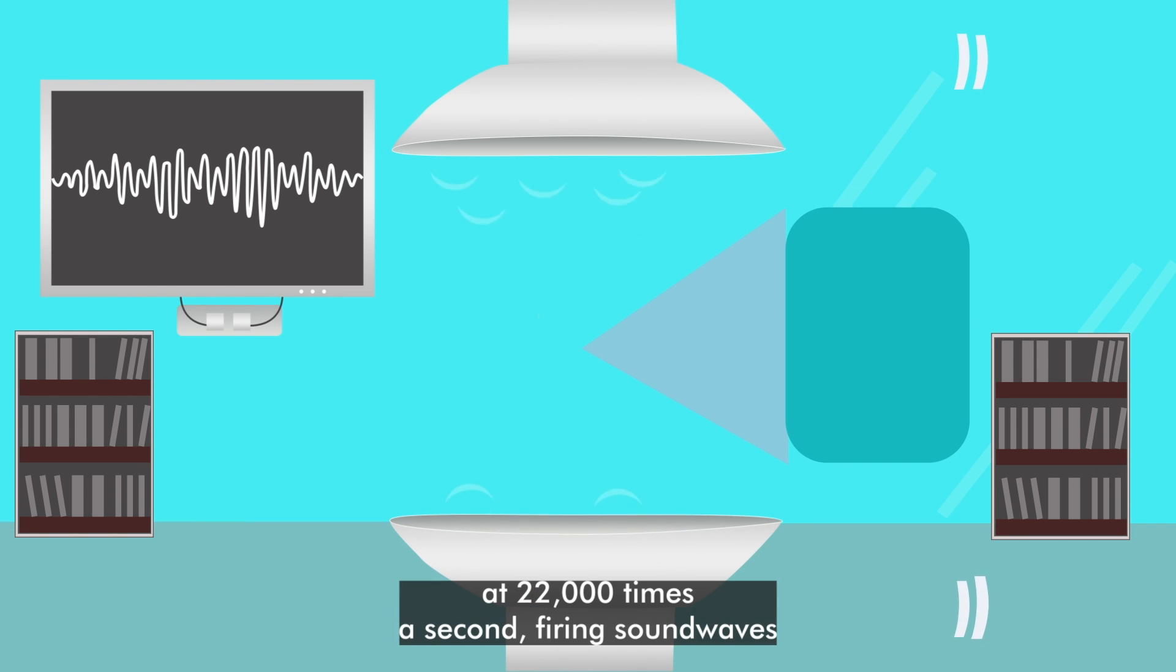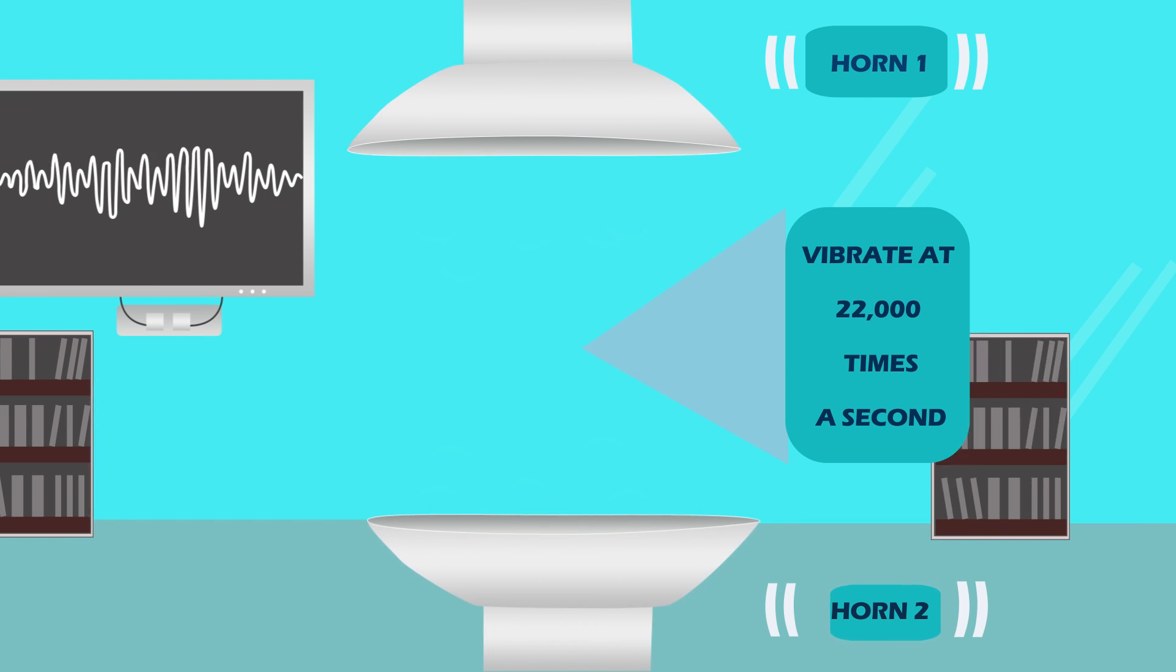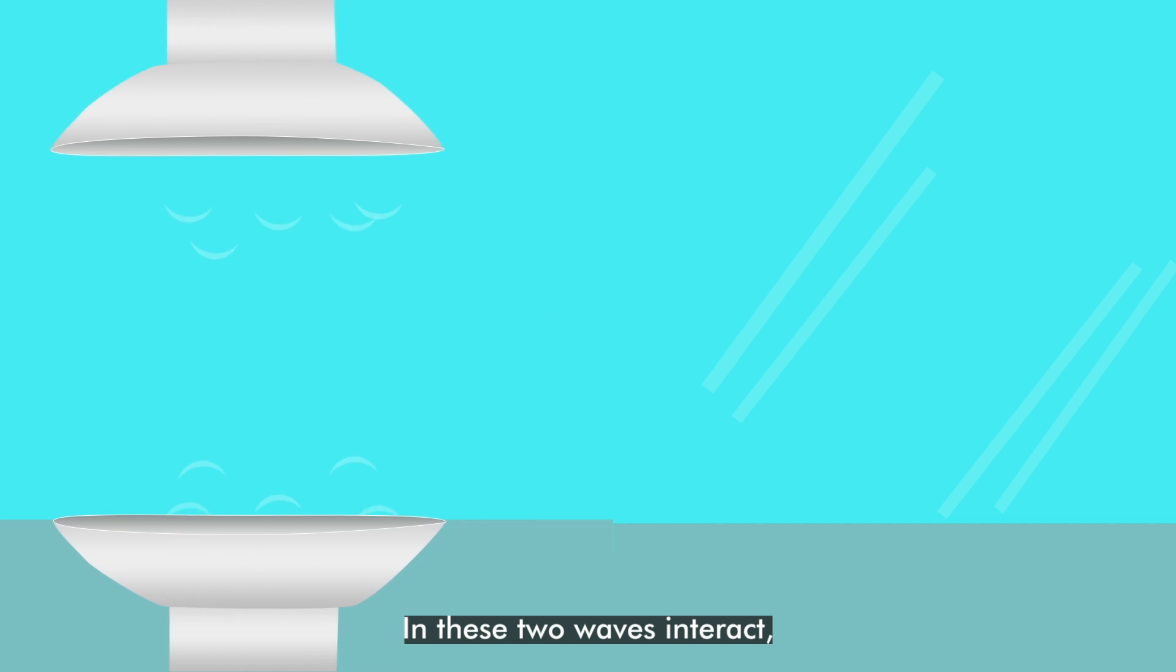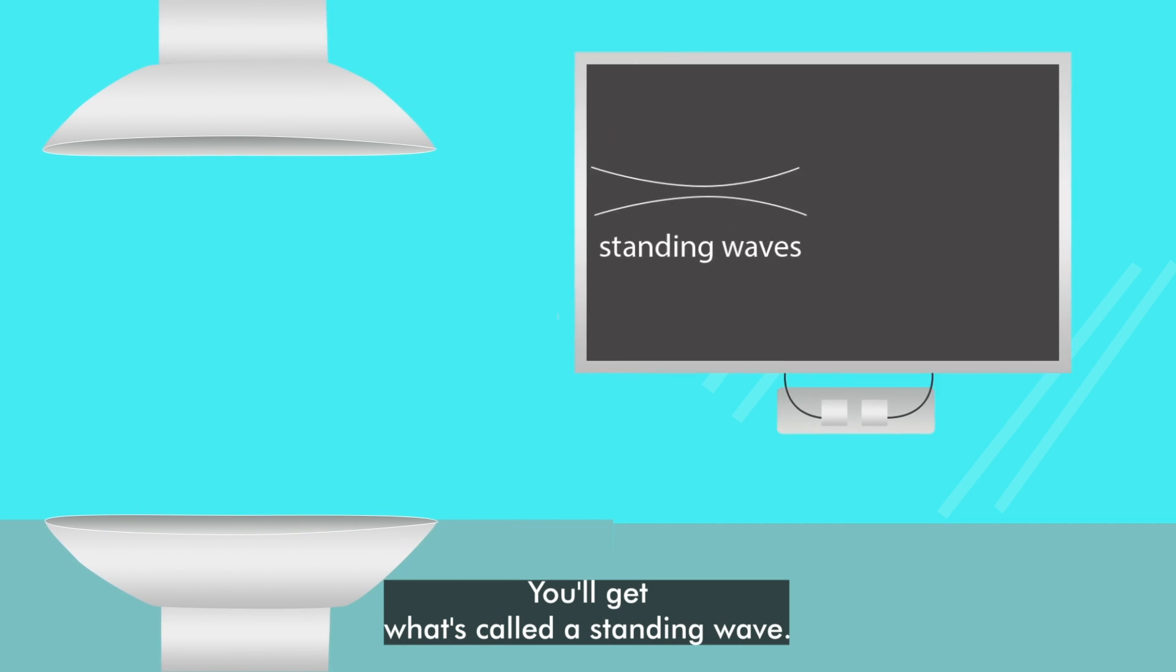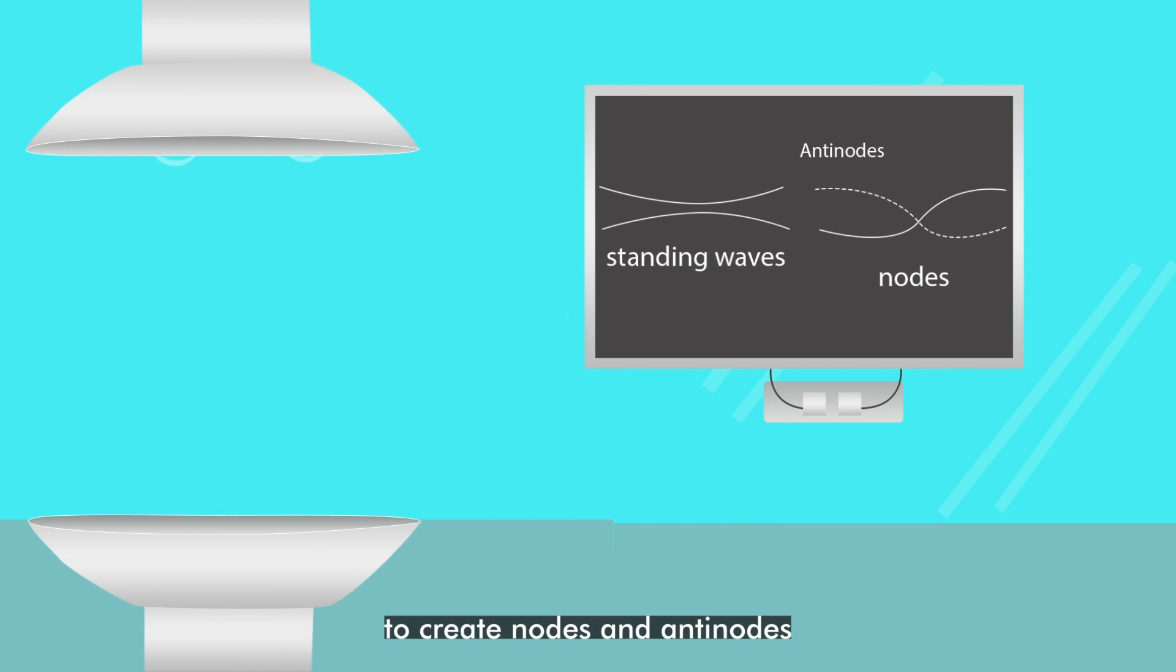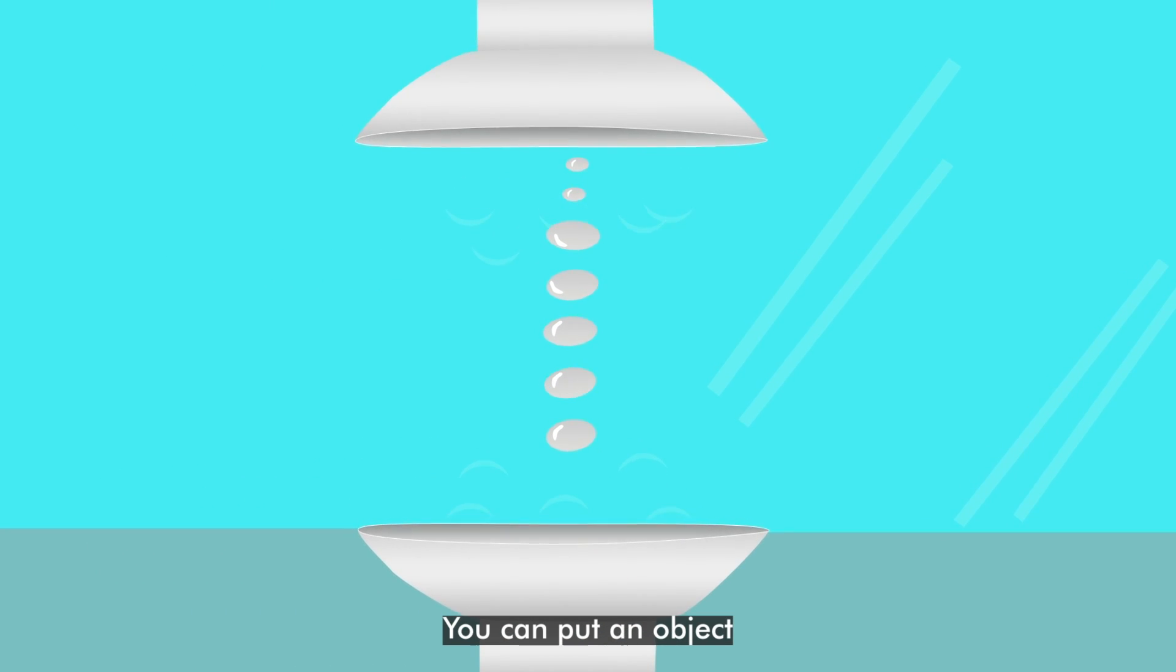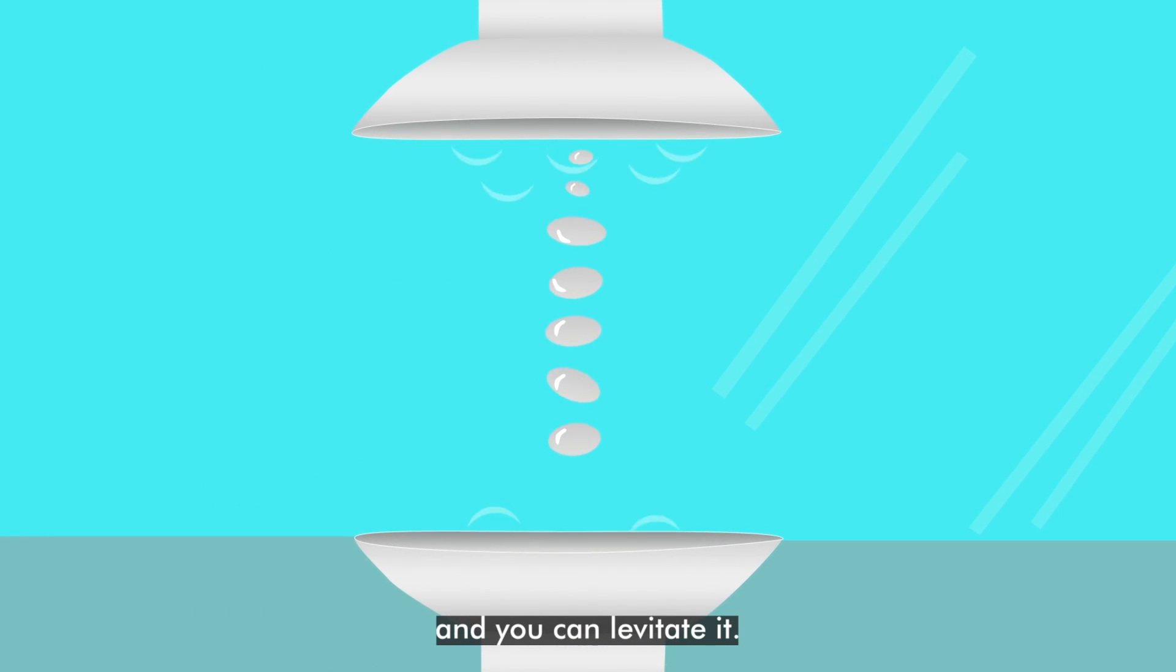Two horns vibrate at 22,000 times a second, firing sound waves into a pocket of air between the two devices. When these two waves interact, you get what's called a standing wave. They'll cancel in places and reinforce in others to create nodes and antinodes. In those particular places where they cancel, you can put an object and levitate it.